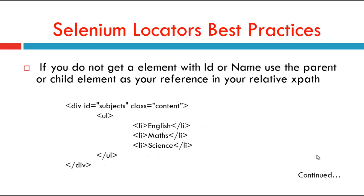If you do not find an element with an ID or name, use the parent or child element as your reference in relative XPath. For example, consider HTML code with an ID equal to 'subject', class name 'content', and it is an unordered list. In the list there are three elements: English, maths, and science.